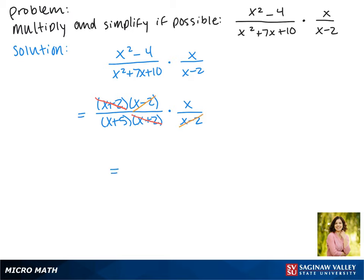Our final answer is what's left. On the top, all we have is an x, and on the bottom we have x plus 5. So this is our simplified answer.